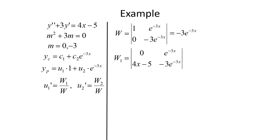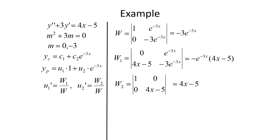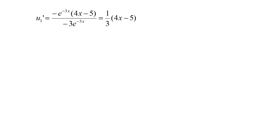We determine the Wronskian values. For W, we have 1 and e^(-3x) with derivatives 0 and -3e^(-3x), giving W = -3e^(-3x). For W1, replacing the first column with 0 and (4x - 5), the determinant gives -e^(-3x)·(4x - 5). For W2, replacing the second column with 0 and (4x - 5), W2 = 4x - 5. Then u1' = W1/W = [-e^(-3x)(4x-5)] / [-3e^(-3x)], and the e^(-3x) terms cancel giving (1/3)(4x - 5). For u2' = W2/W = (4x-5)/(-3e^(-3x)) = -(1/3)e^(3x)(4x - 5).